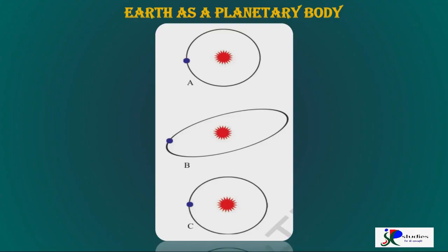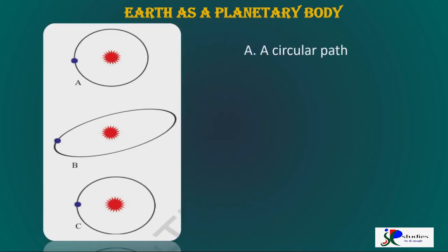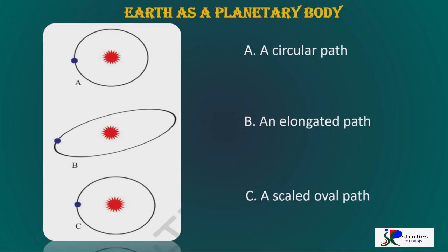Look at these pictures of the Earth, Sun and the orbit. Which one do you think is the correct picture? The Earth's orbit is a scaled oval path. The Sun is in the middle line, with 1.4 cm on one side and 1.5 cm on the other side.